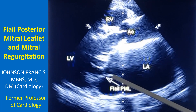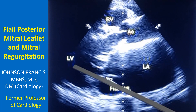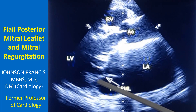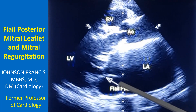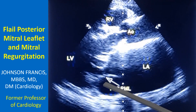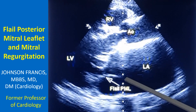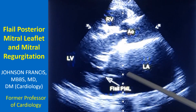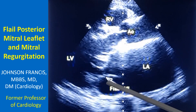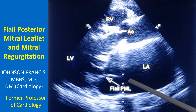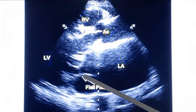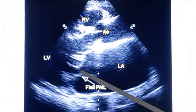The posterior mitral leaflet is seen pointing towards the left atrium because it is a flail posterior mitral leaflet. Normally during systole, the leaflets are pulled into the ventricular side by the contraction of the papillary muscle and the chordae tendineae are taut. When the chordae tendineae are ruptured, the leaflet becomes flail and points towards the left atrium in systole due to the force of pressure in the left ventricle. Rising pressure in the left ventricle causes the flail leaflet to point away from the left ventricle into the left atrium. There is a gap between the anterior and posterior mitral leaflets, which causes mitral regurgitation.